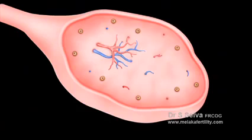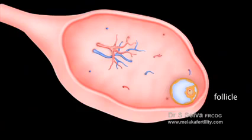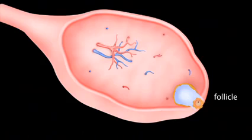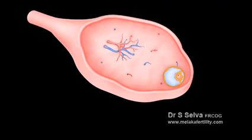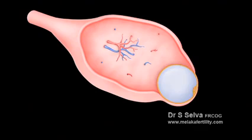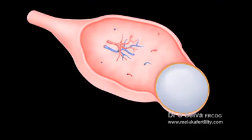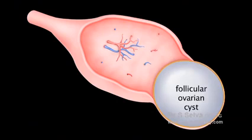Follicular cysts are the most commonly seen ovarian cysts. During the early part of the menstrual cycle, a follicle develops in the ovary. The follicle contains fluid to protect the egg as it grows. During ovulation it bursts and releases an egg. After that, the follicle becomes a corpus luteum and shrinks. Sometimes a follicle does not release an egg and does not shed its fluid. If this happens, the follicle can get bigger as it swells with fluid. This becomes a follicular ovarian cyst.